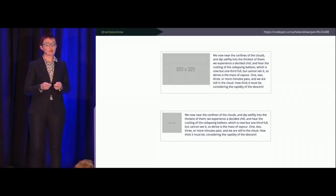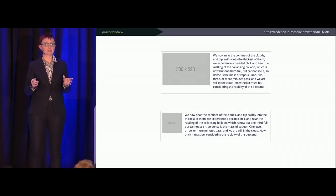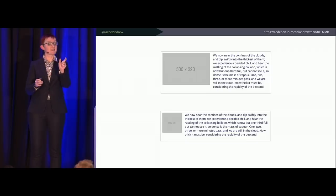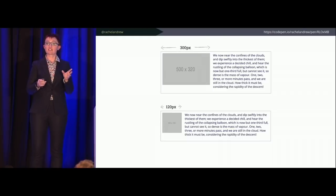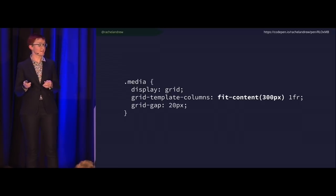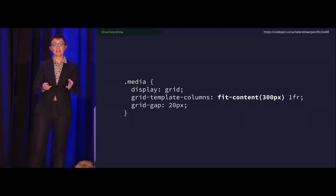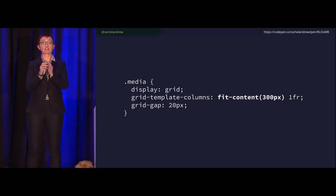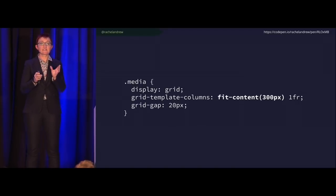Here's an example: a media object with an image. Using responsive images you might want max-width 300px — if the image is bigger, stop at 300px; if it's a tiny icon, just take as much space as it needs. You can do that with `fit-content(300px)` for the first column — 'don't get bigger than 300 pixels' — and `1fr` for the text side. If the image is only 100px, the track won't reach 300px and the rest of the space goes to the text. Very flexible.